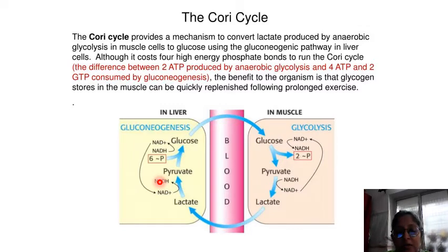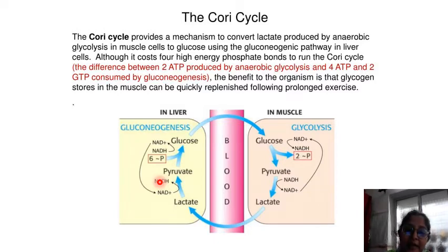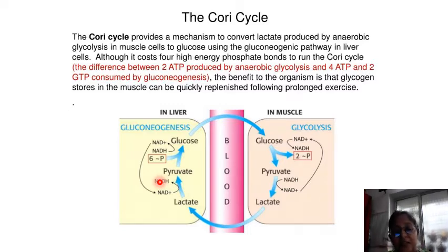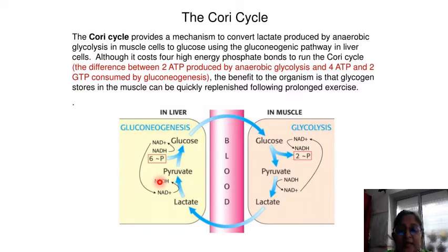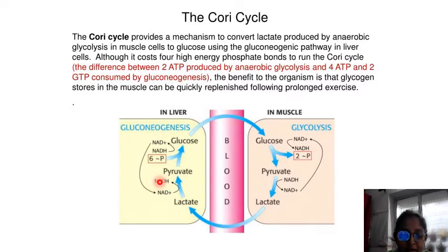Lactic acid fermentation converts pyruvate to lactate via the enzyme lactate dehydrogenase. Most importantly, fermentation regenerates NAD+, maintaining its concentration so that additional glycolysis reactions can occur. The fermentation step oxidizes NADH back to NAD+, transferring electrons from NADH to reduce pyruvate into lactate.